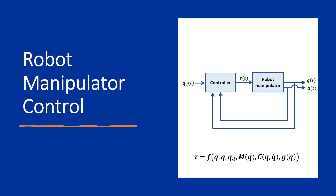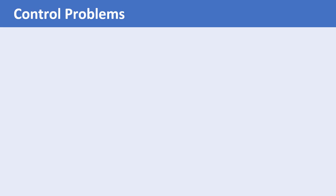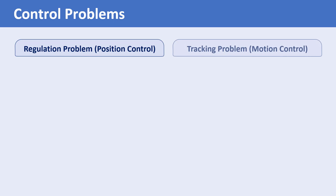In this lecture, we explain the control problem of robot manipulators and discuss the objectives, the constraints, and the control inputs and outputs. Robot manipulator control problems are classified into two main categories: the regulation problem or position control problem, and the tracking problem or motion control problem.